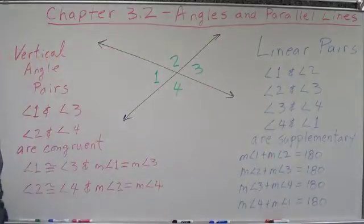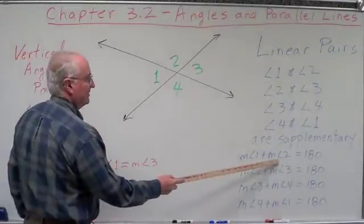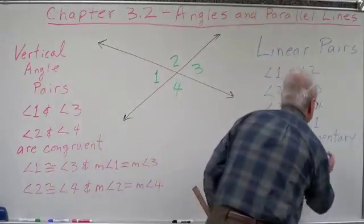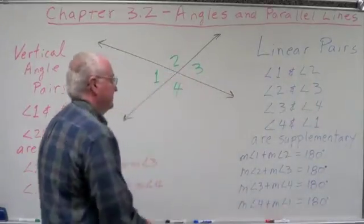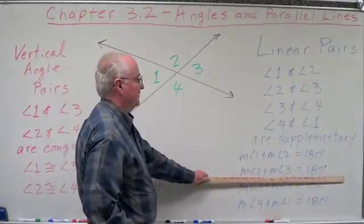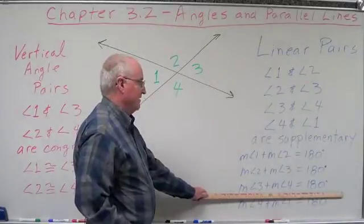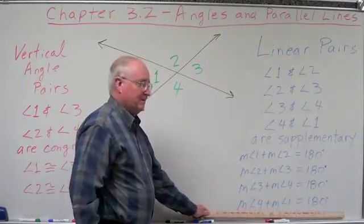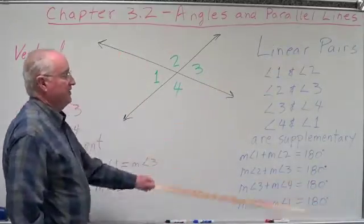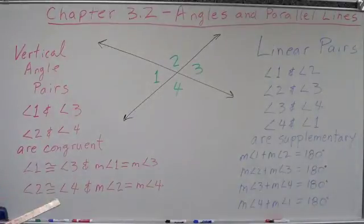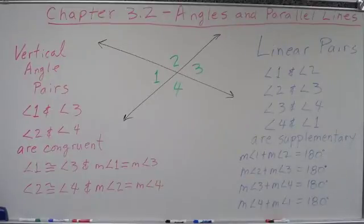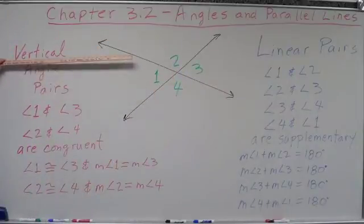Because they make a straight line, they are supplementary. The measure of angle one plus the measure of angle two equals 180 degrees. The measure of angle two plus the measure of angle three equals 180 degrees. The measure of angle three plus the measure of angle four equals 180 degrees. The measure of angle four plus the measure of angle one equals 180 degrees. These are very important relationships when we have two intersecting lines, and we're going to be using those later, because transversals are lines that intersect two or more lines at different points, and they're going to create linear pairs and vertical angle pairs.